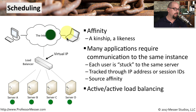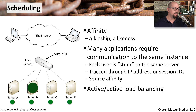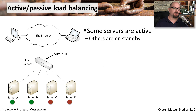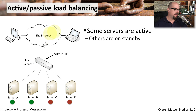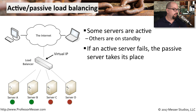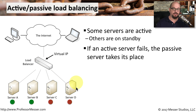The same thing will happen for the second user — the load balancer recognizes it's the second user and sends that traffic back to server B. Some load balancers can be configured for active-passive load balancing, meaning some servers will be currently active and able to take requests, while other servers are on standby. The active servers are marked green and the standby servers are red. If any one of these active servers fails, the load balancer will identify the failure and begin using one of the standby servers in its place.